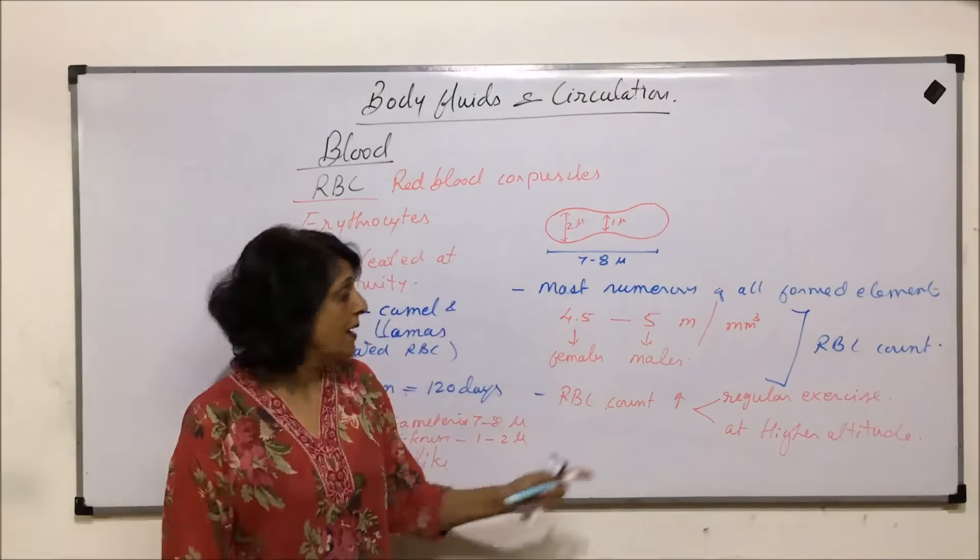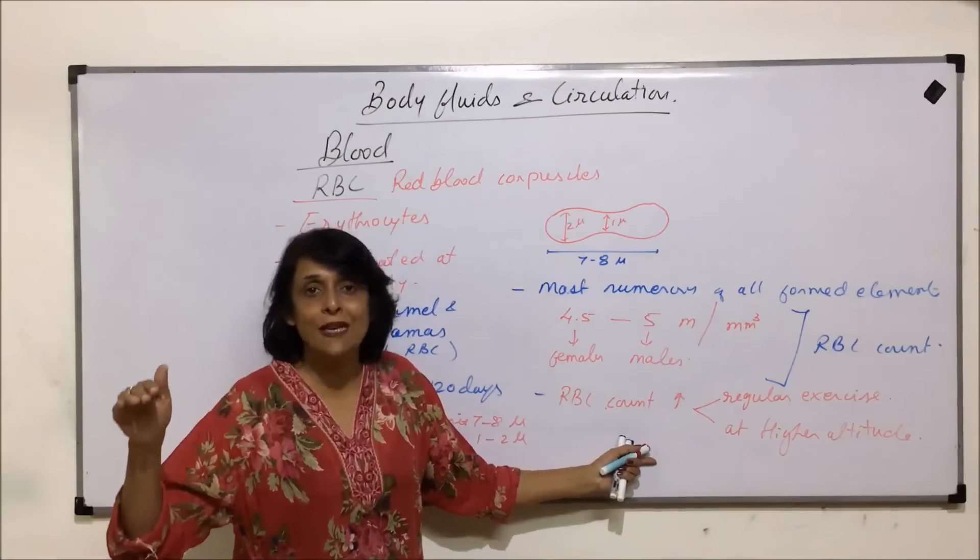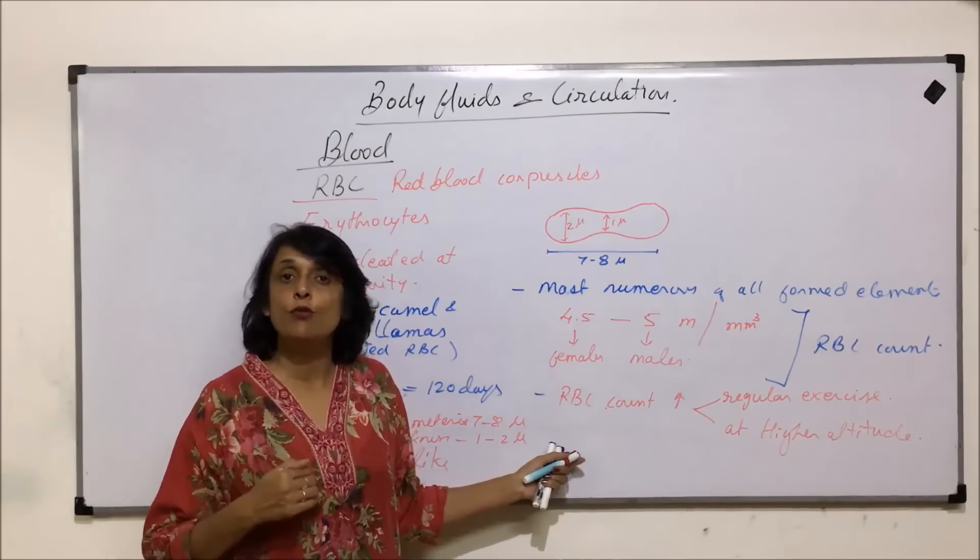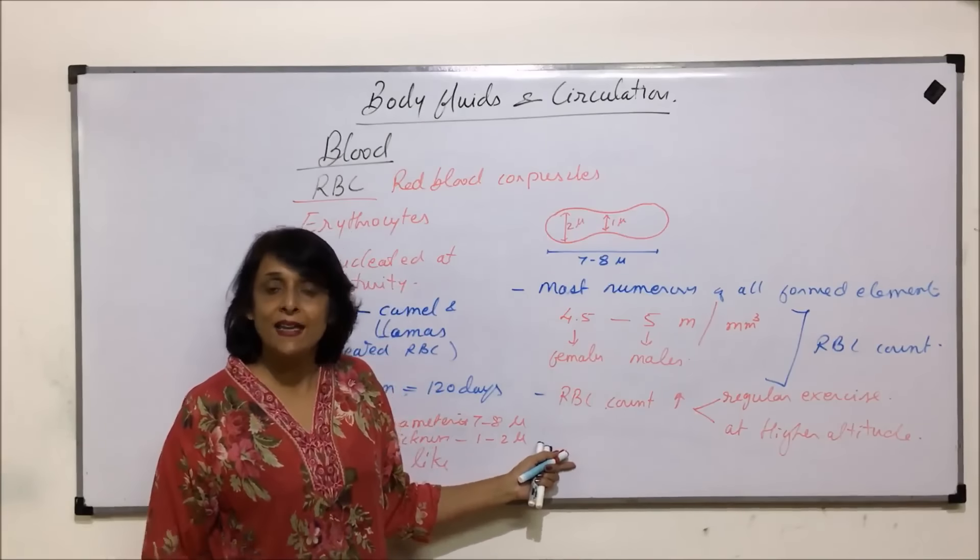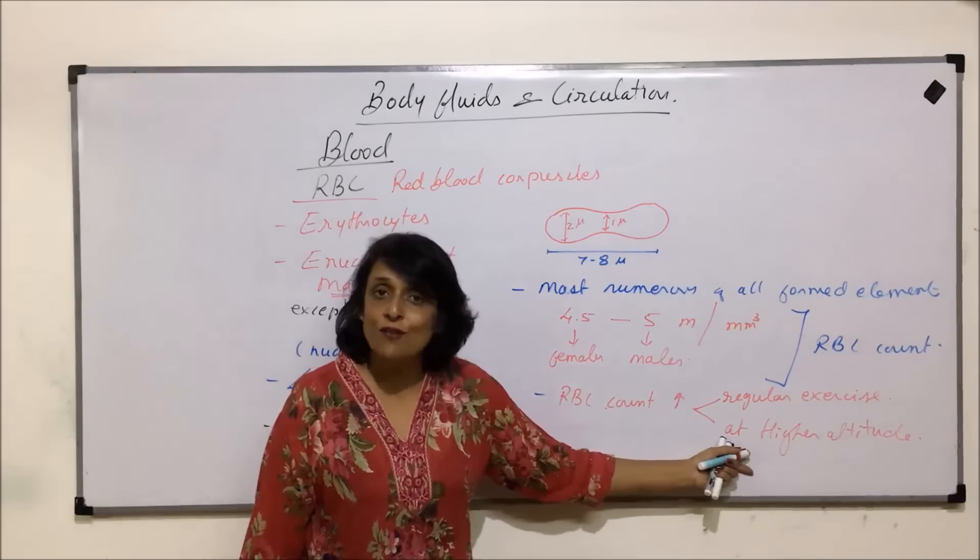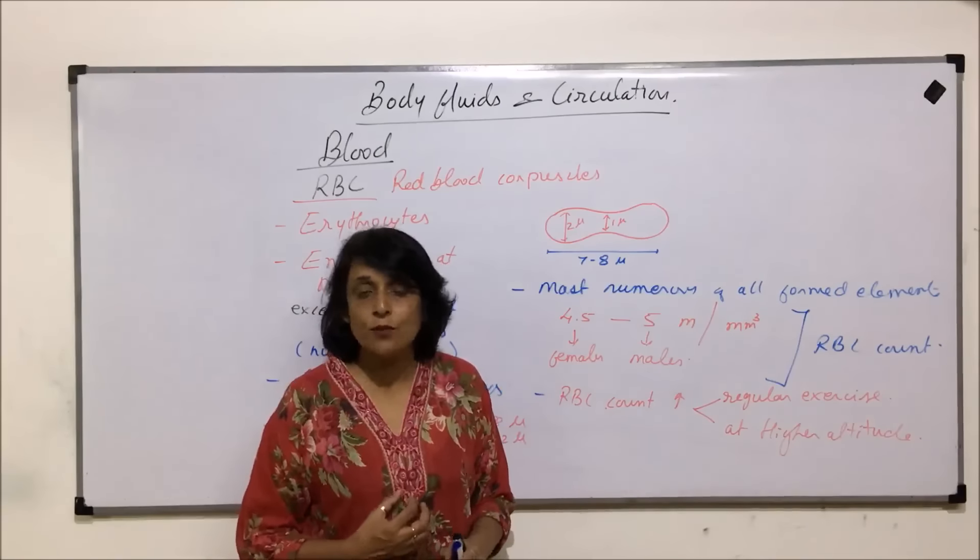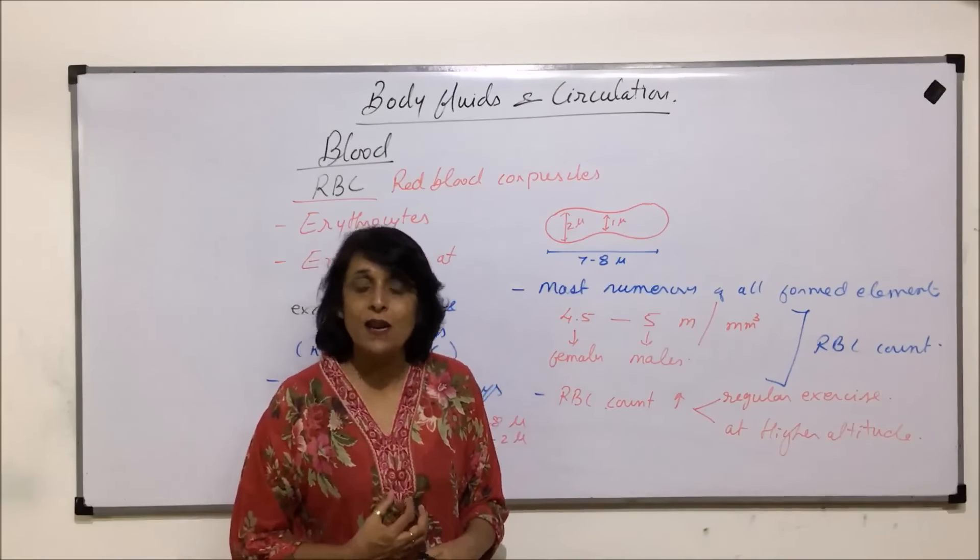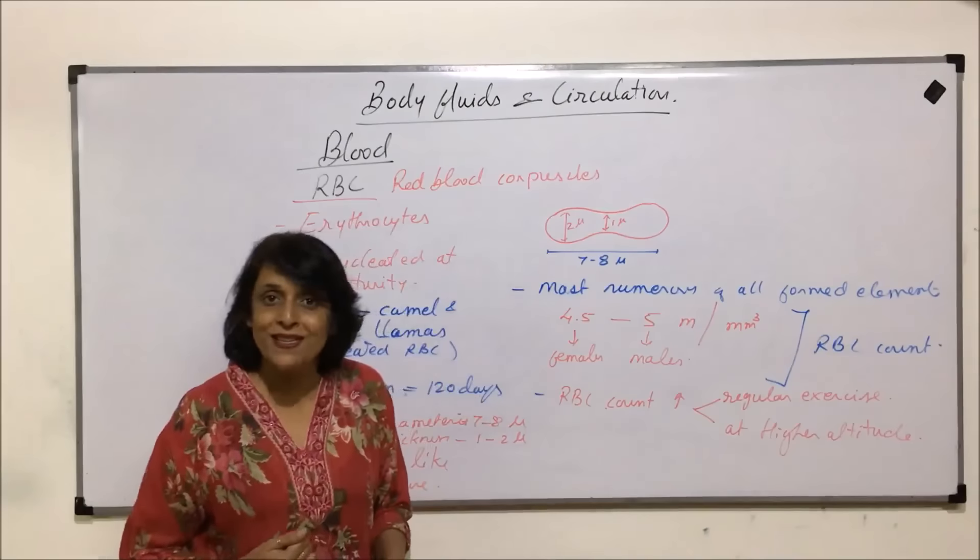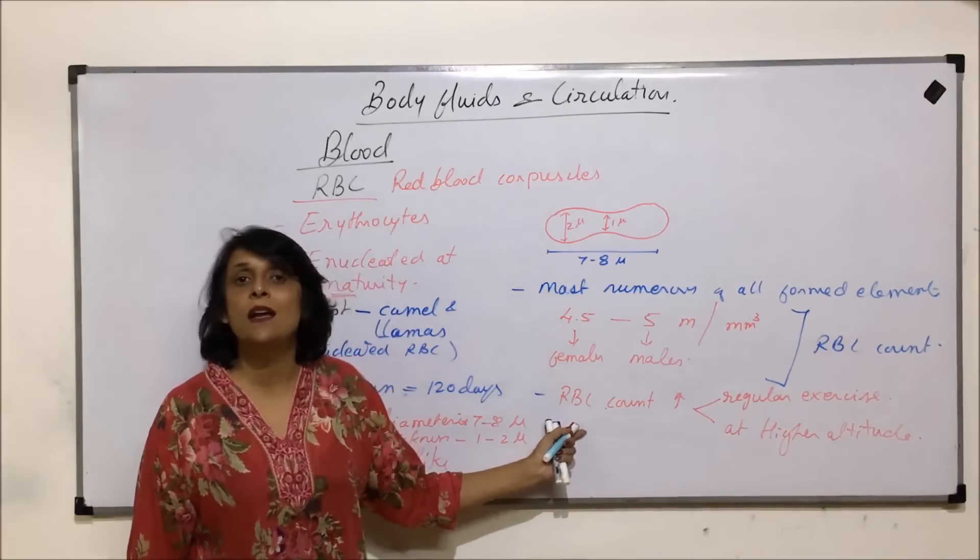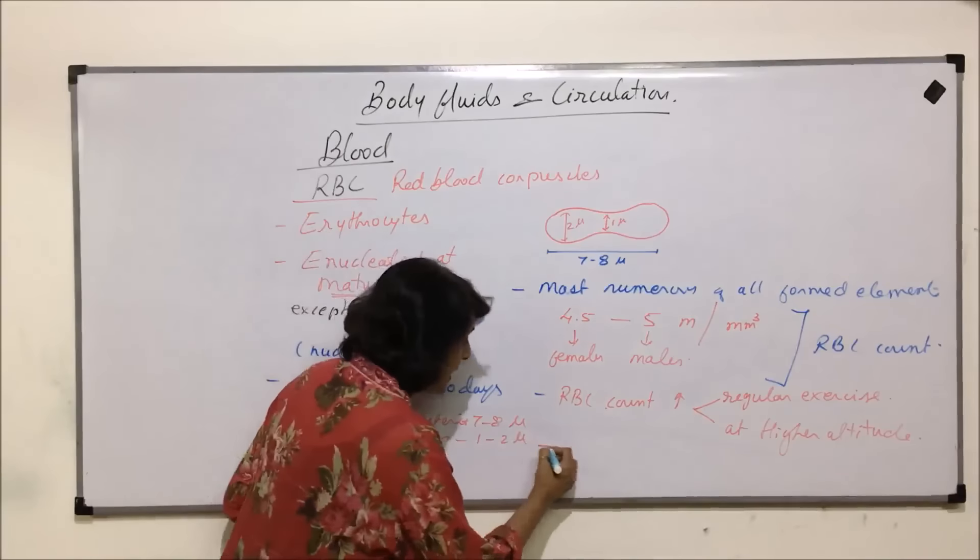If a person is at a higher altitude, that means if the person is living there or if we decide to go and stay there, then over a period of time our RBC count is also going to increase. Because at higher altitude oxygen concentration is less and our requirement is same. So how do we take more and more oxygen? By increasing hemoglobin content. And hemoglobin is present in RBC, so RBC count increases.